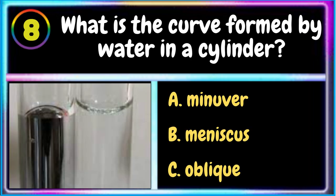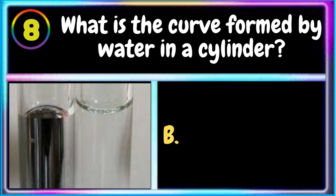8. What is the curve formed by water in a cylinder? A. Mineuver B. Meniscus C. Oblique. The correct answer is B. Meniscus.